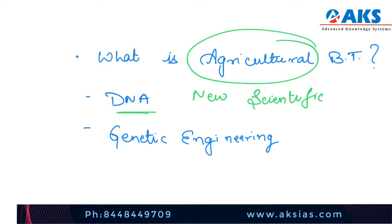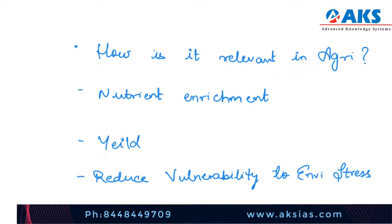Modern biotechnology today also includes the tools of genetic engineering. Even with the help of genetic engineering there is improved use of agricultural biotechnology so as to improve the yield of crops and livestock. Biotechnology is relevant in agriculture through use of new scientific techniques such as genetic engineering and tweaking of microorganisms so as to alter the DNA and improve the yield of crops and livestock. Number one relevance is nutrient enrichment.